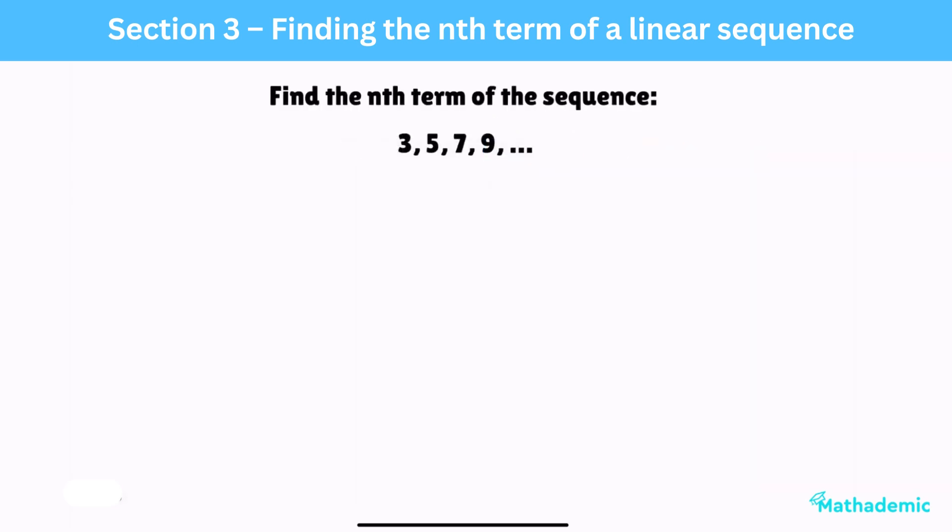Let's have a look. Find the nth term of the sequence 3, 5, 7, 9, and so on. First up, notice that each term has a common difference of 2. So, our nth term formula will start with 2n. Next, take this value away from our first term, which in this case is 3, and you get 1. So, that's the second part of our formula, and that's it. 2n plus 1 is our answer.